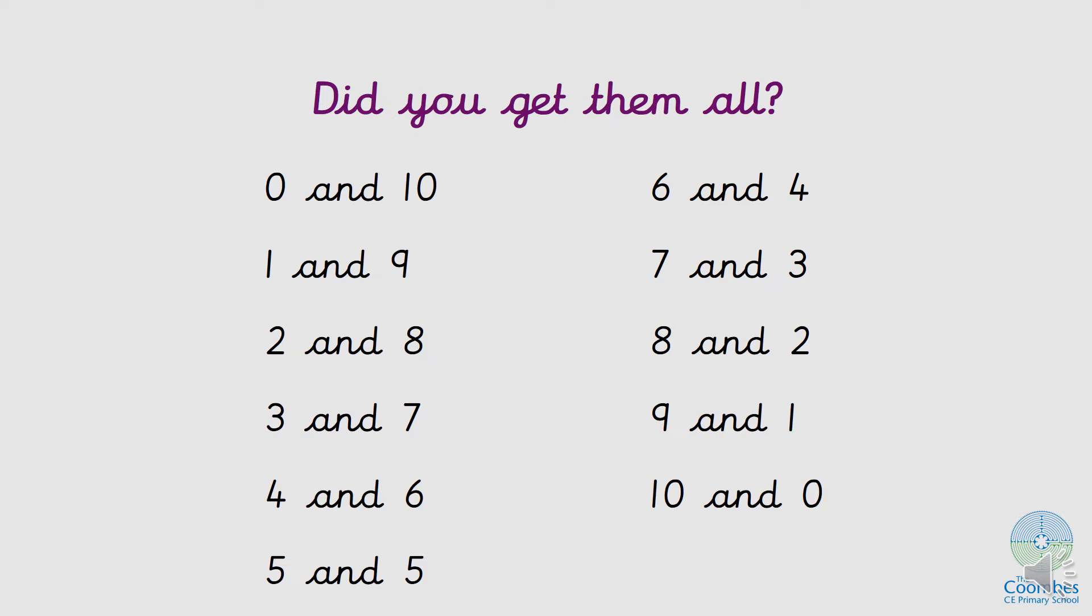Remember, our number bonds to 10 are two numbers that add together to make 10. So we could have had 0 and 10, 1 and 9, 2 and 8, 3 and 7, 4 and 6, 5 and 5, and then all the other way around as well. So well done if you got them all, give yourself a big pat on the back.